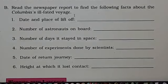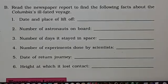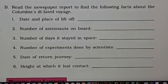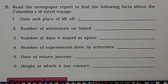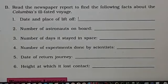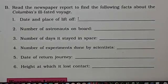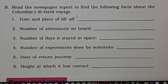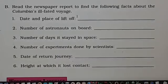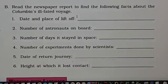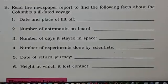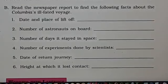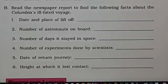Read the newspaper report to find the following facts about Columbia's ill-fated voyage. Date and place of liftoff: 16th January 2003, from Florida. Number of astronauts on board: seven. Number of days it stayed in space: 15 days, 16 hours, and 34 minutes. Number of experiments done by scientists: 80 experiments.